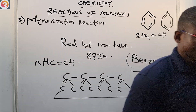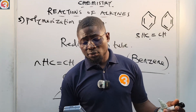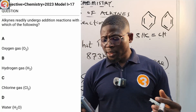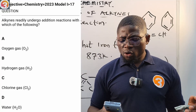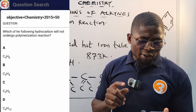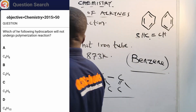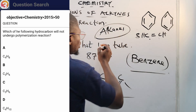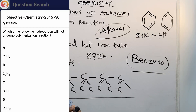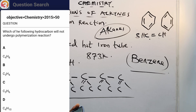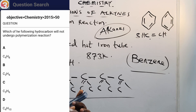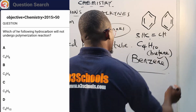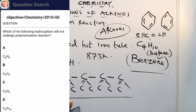Now let's answer the questions. The 2023 question asked: 'Alkynes readily undergo addition reactions with which of the following?' The answer is option B — hydrogen gas H₂, since we covered hydrogenation. For the second question: 'Which hydrocarbon will not undergo polymerization?' Alkanes do not undergo polymerization, and C₄H₁₀ is butane — an alkane — so option D is the correct answer.